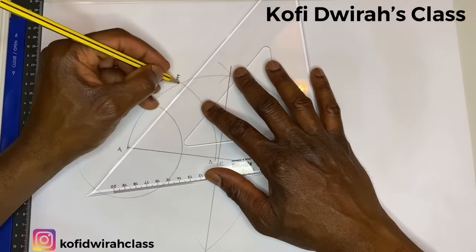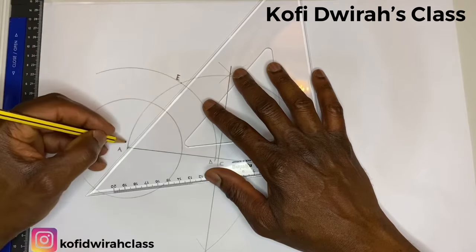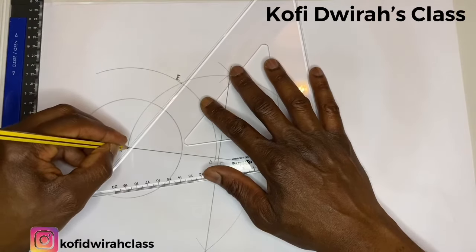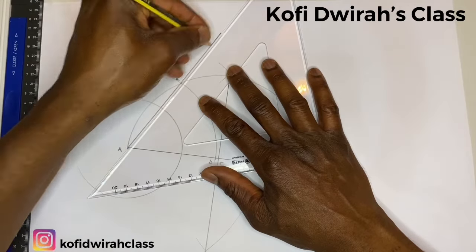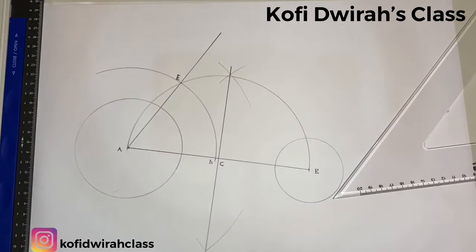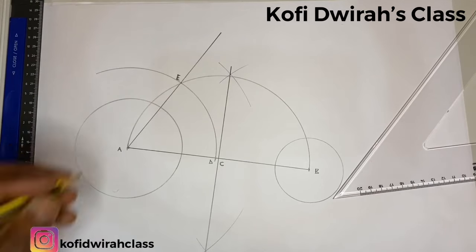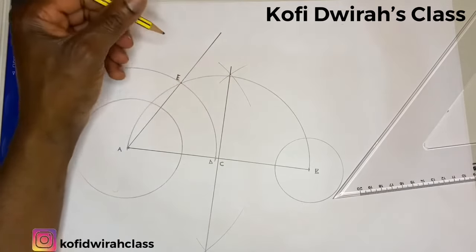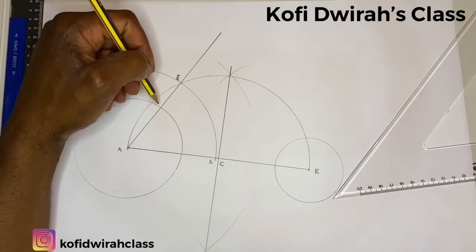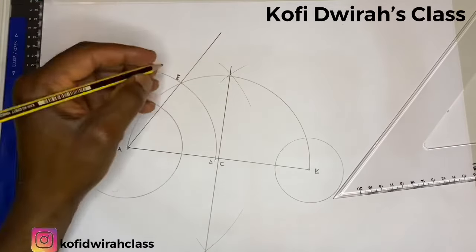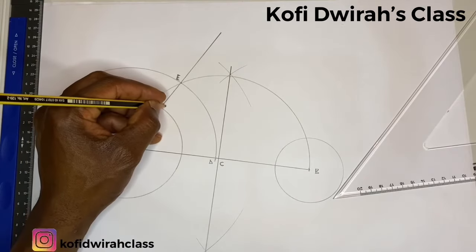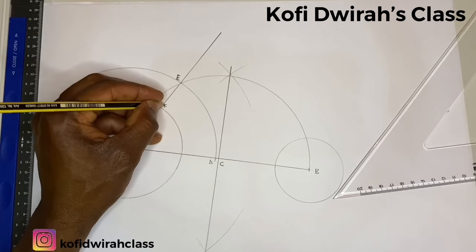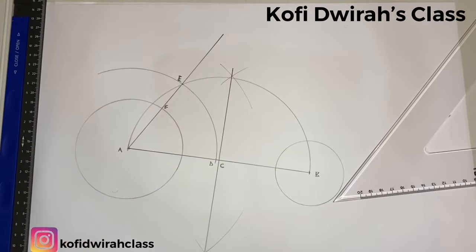From here to here, draw a straight line. Good. Then we have this line — this line is a normal. So we have this point to be point F. It's point F.